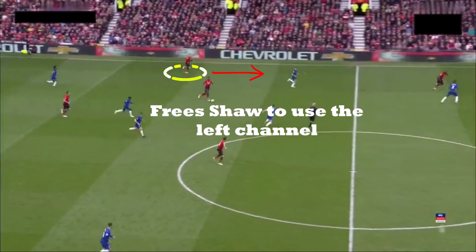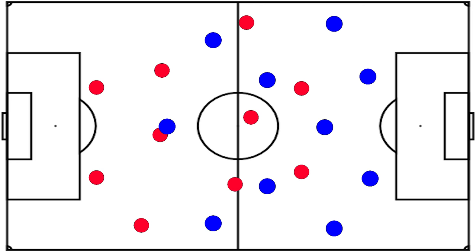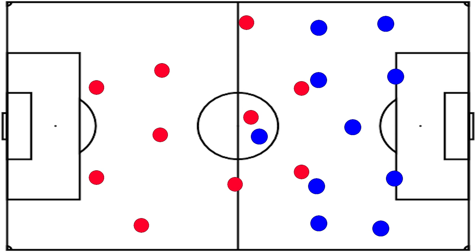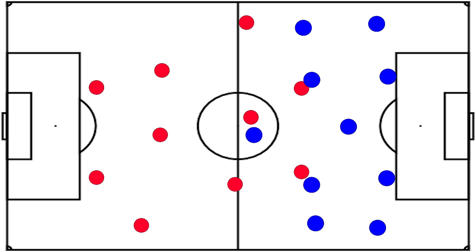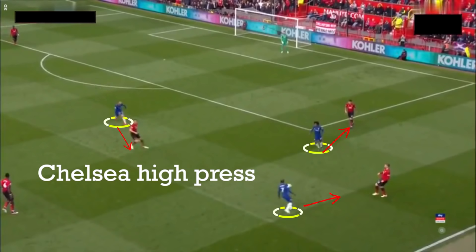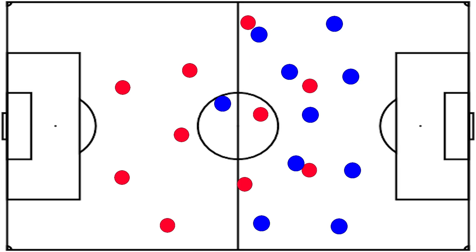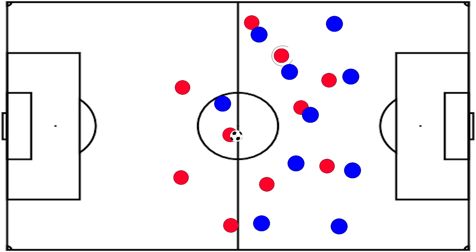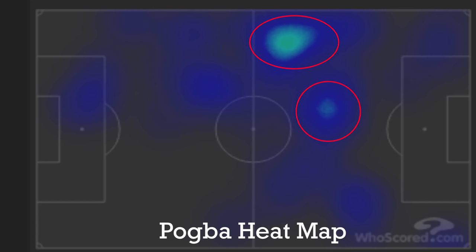At the same time, Chelsea would alternate between high pressing and deeper blocks. Kante and Kovacic are highly mobile, allowing them to press higher up the pitch. They looked to cut off passing options higher up the field and force errors from United defenders who are not particularly comfortable on the ball. As United moved higher up the pitch, this is where Ole's choice of formation paid dividends. Pogba would alternate between moving into their left-hand channel and staying more central, as shown by his heat map.